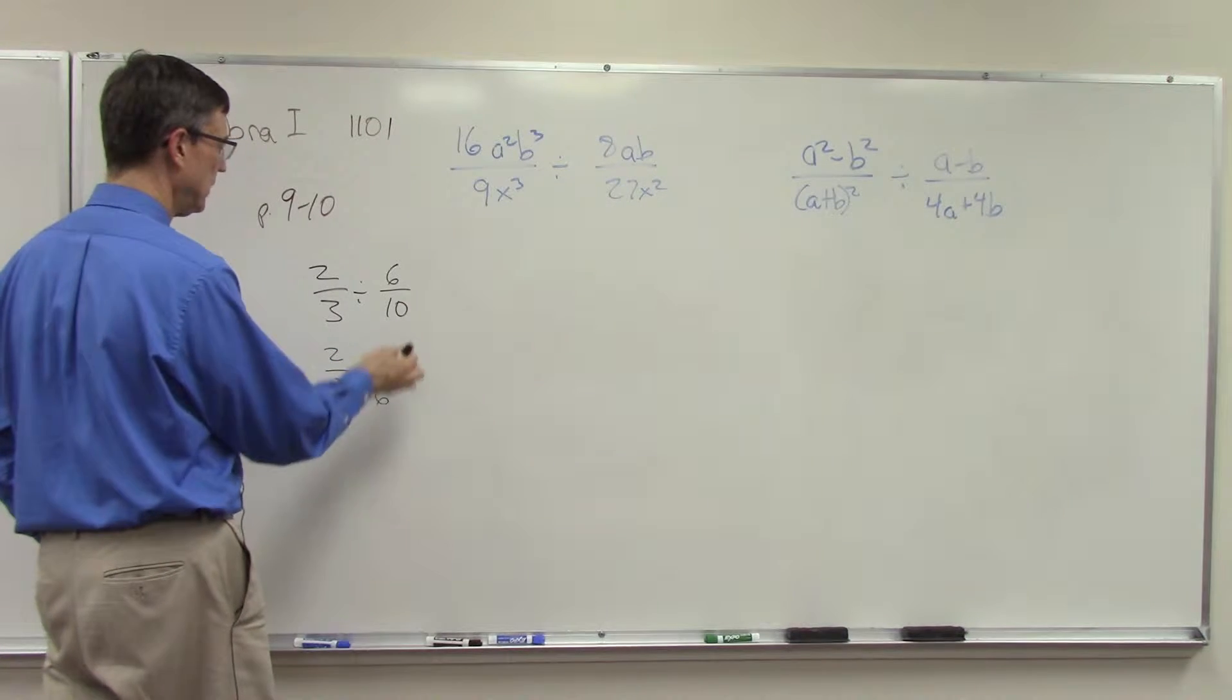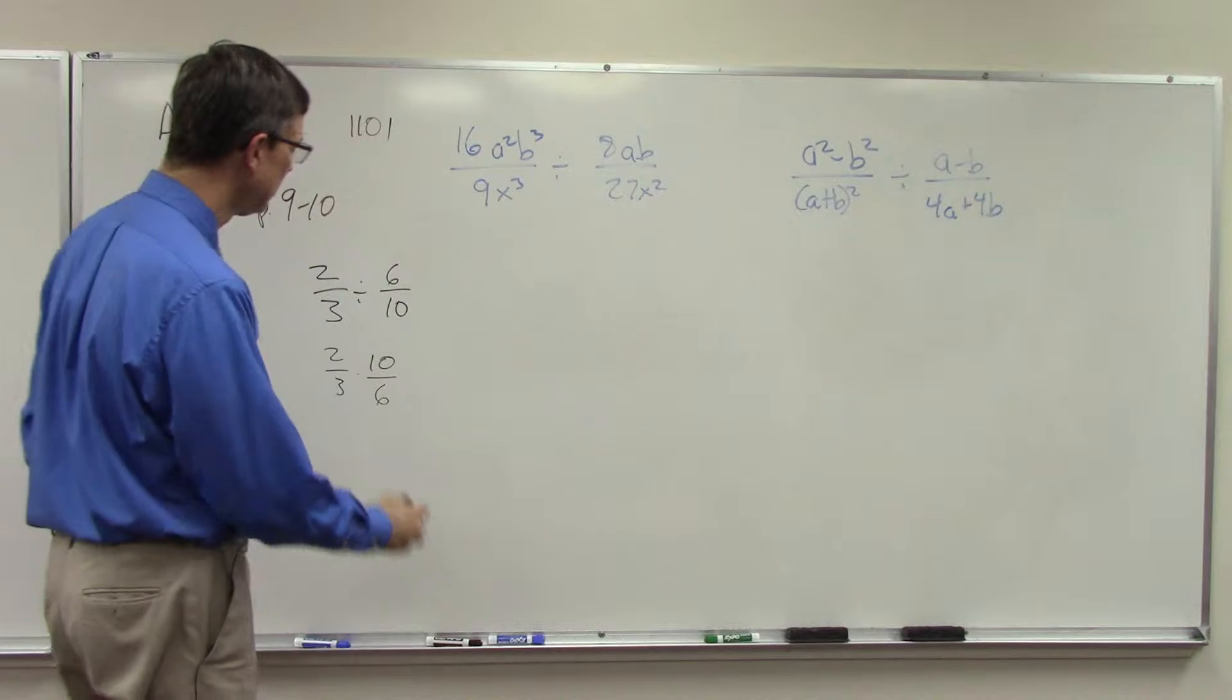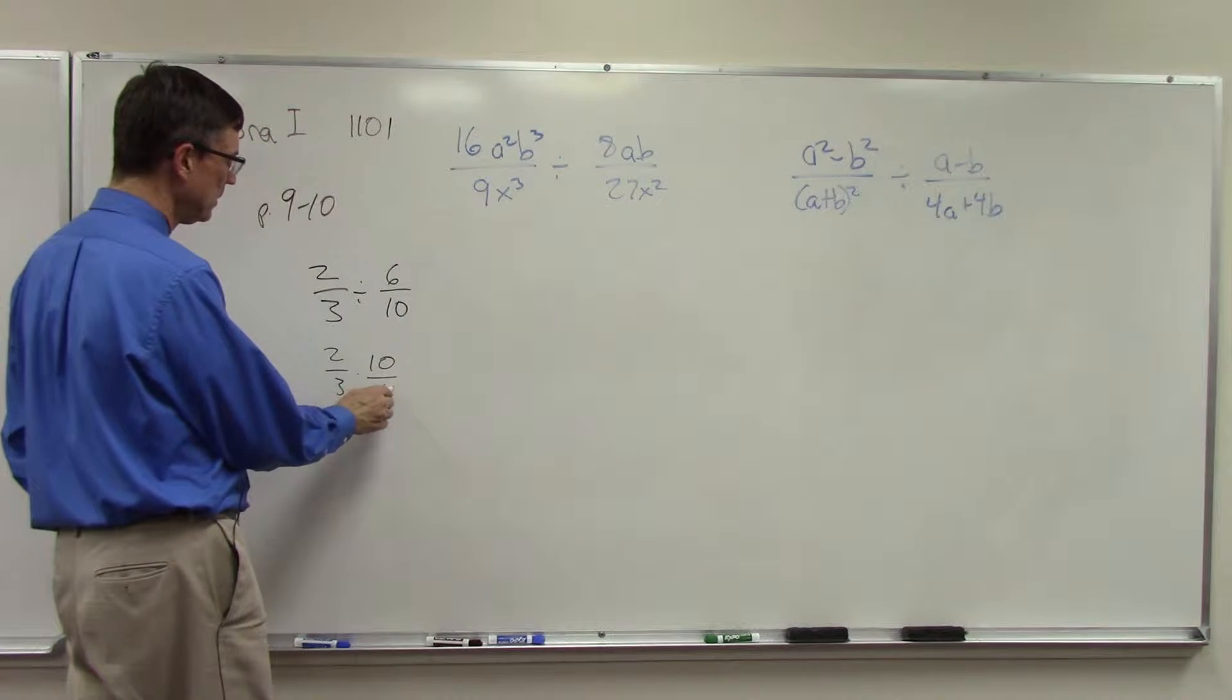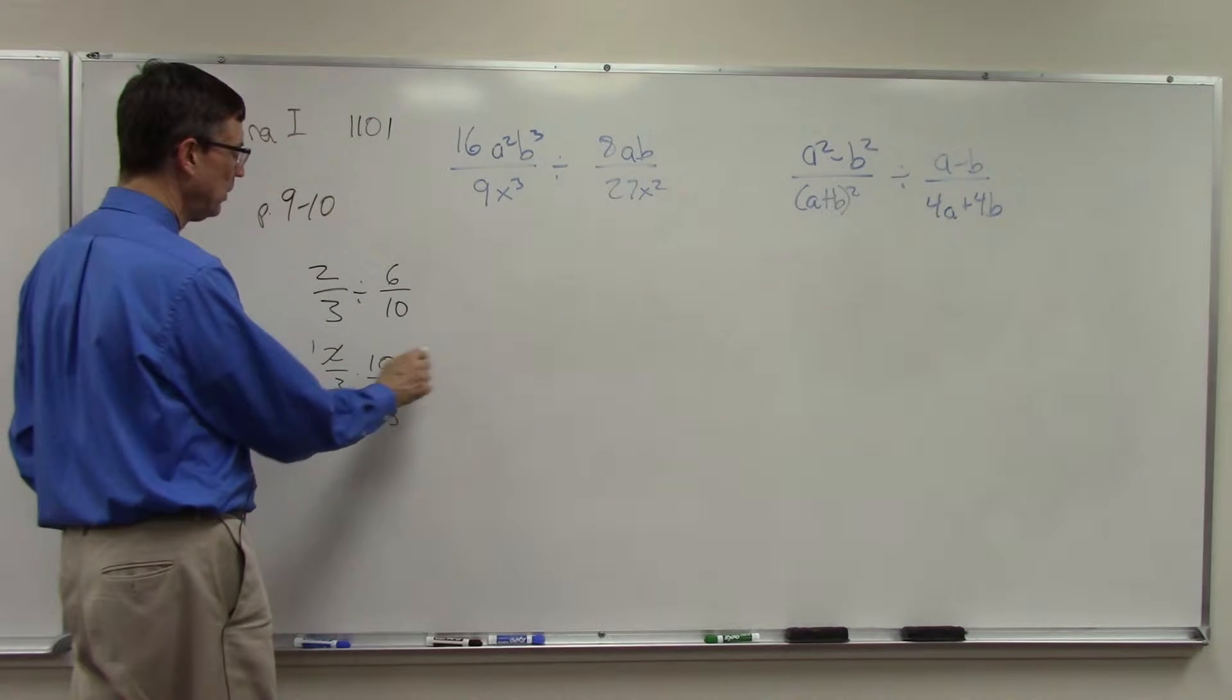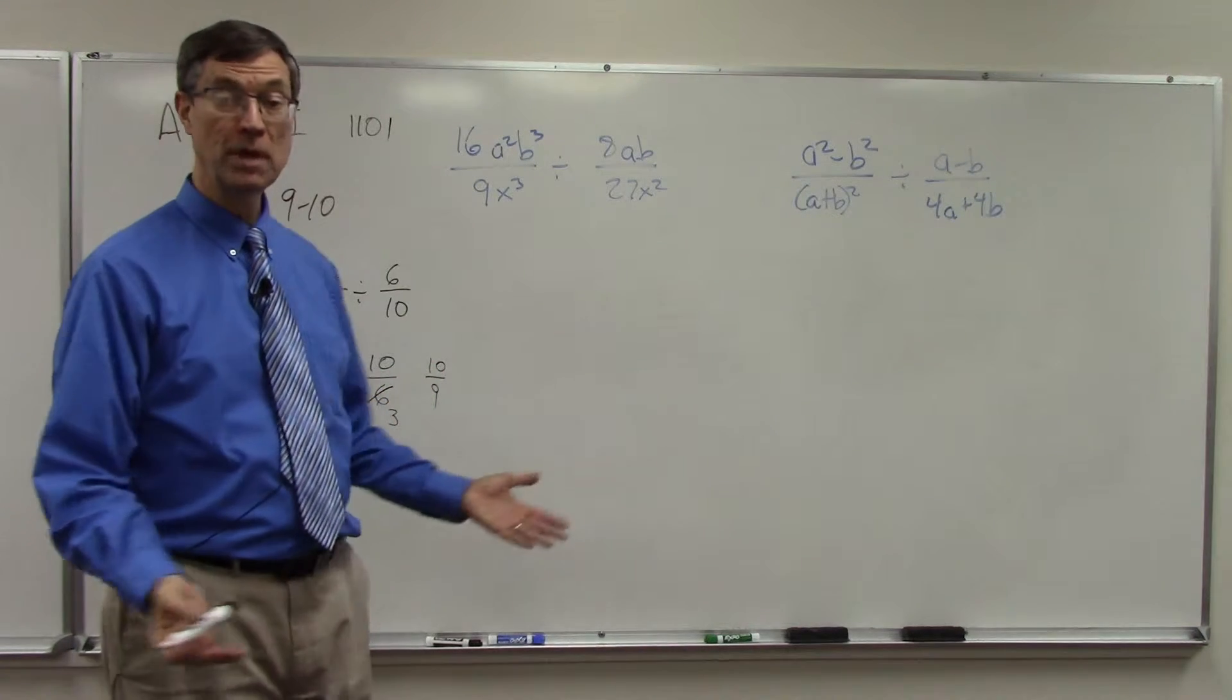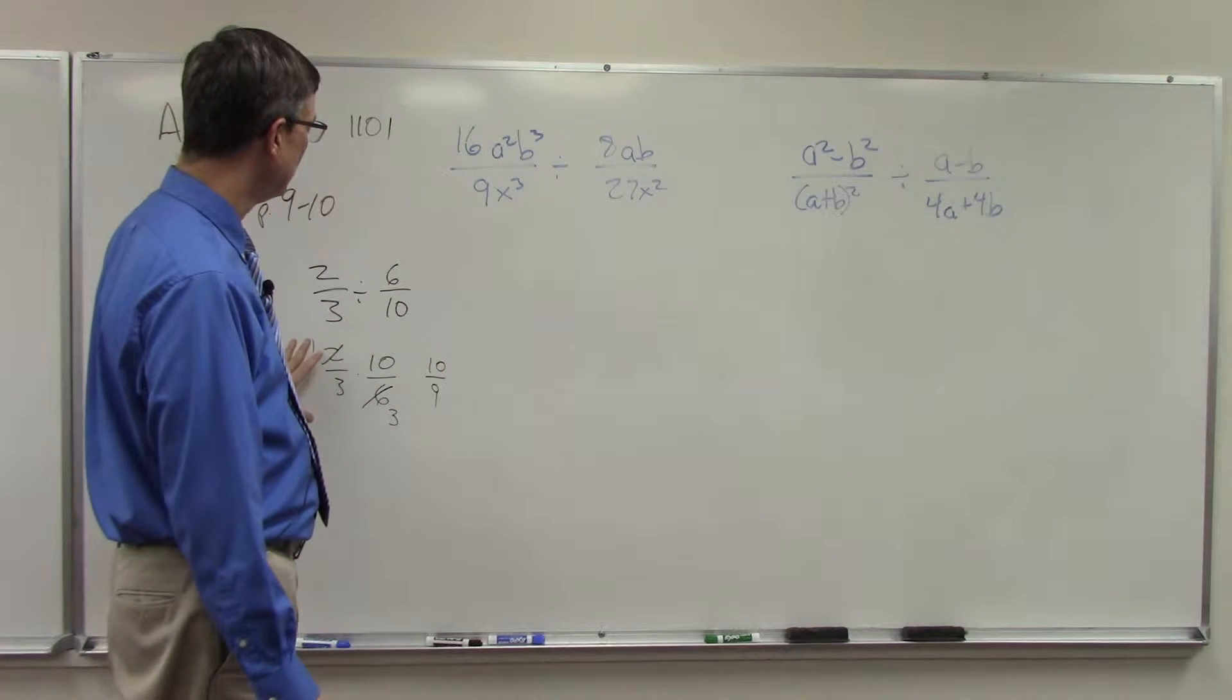So this one becomes 10 over 6, and now we look to see if there's anything that will cancel from the top to the bottom. I can see right here this divides by 2 and I would get 3. So now I can multiply straight across and get 10/9. You could reduce that if you were doing fractions, but we always flip the one we're dividing by, then see if anything cancels, and then we're done.